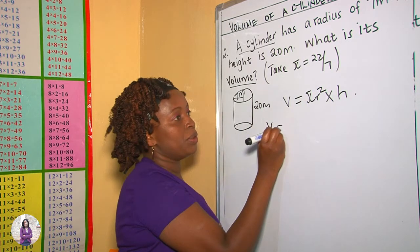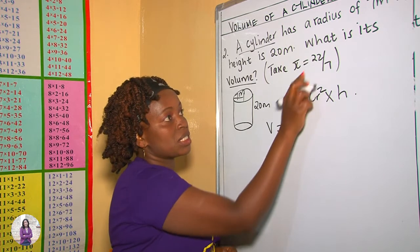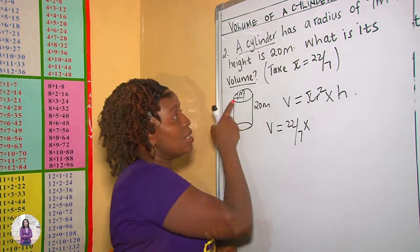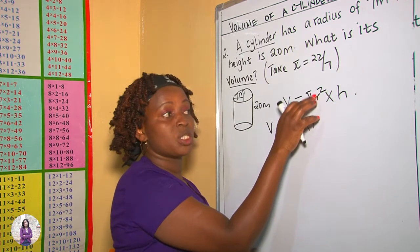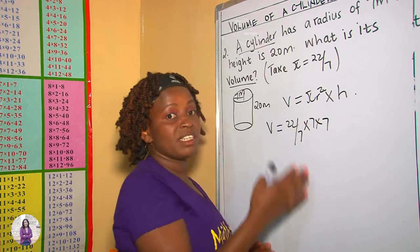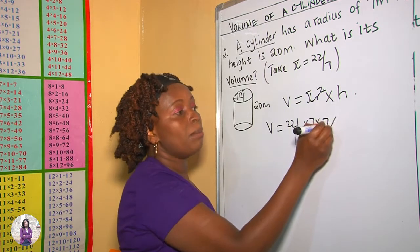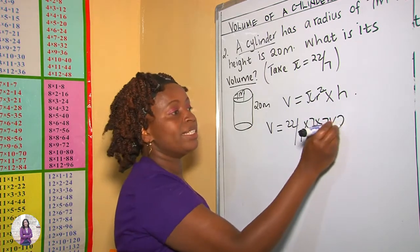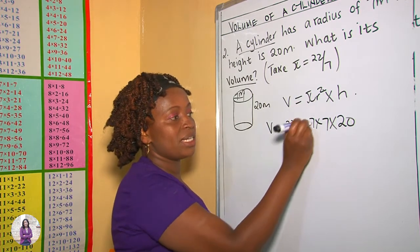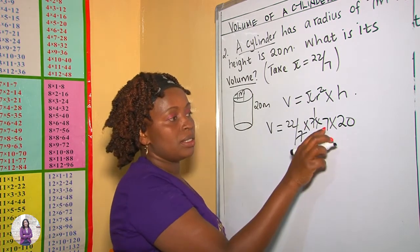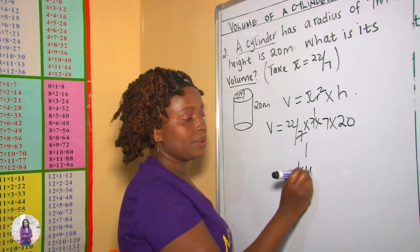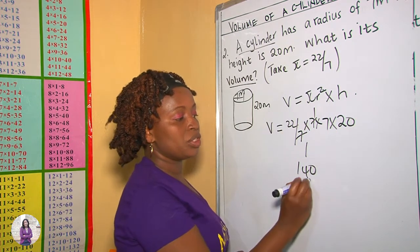Therefore, our volume will be pi, given as 22 over 7, multiplied by our r, which is 70 — but should be 70 squared because it's r squared. So r squared means 7 times 7, multiplied by height, and our height is 20. We cross-multiply: 7 goes into 7 once. Then 7 times 20 is 140, multiplied by 22.